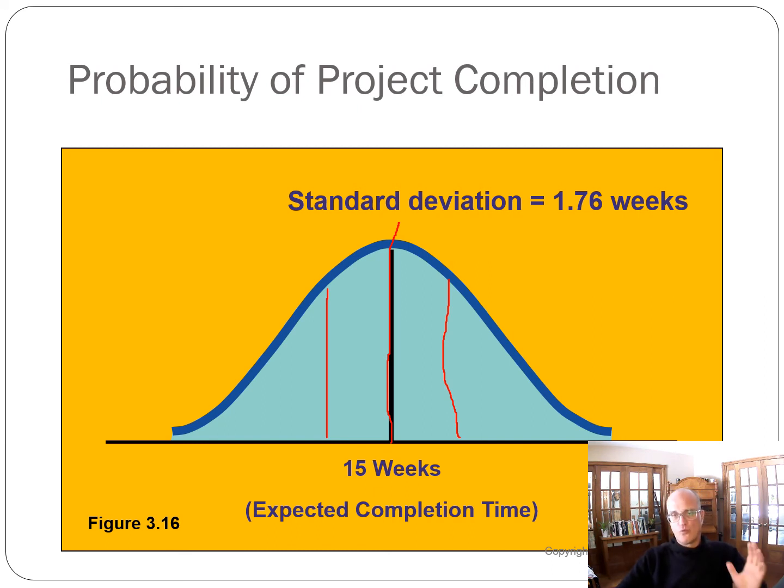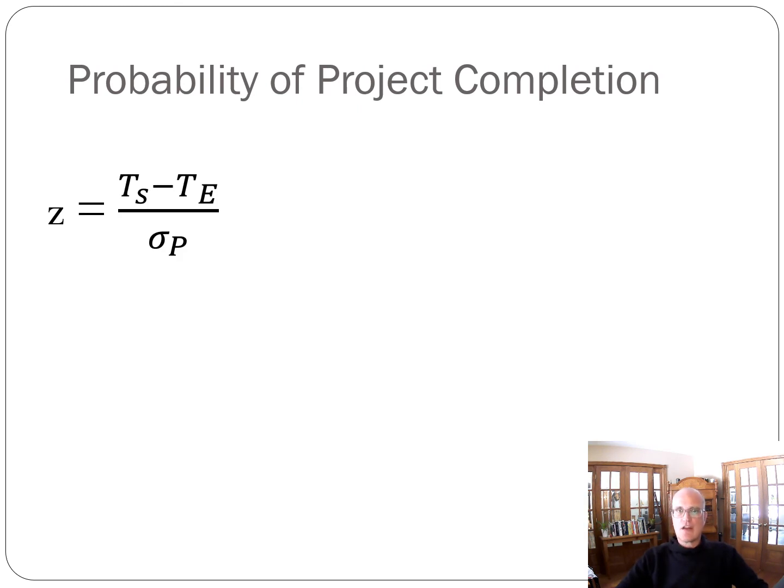So we look at the normal distribution, and then we can take a Z value, which is TS is the target time, TE is the expected time, divided by the standard deviation. This is another place that students often go wrong. They won't do the standard deviation, they will do the variance, and then they'll get a value that causes them some grief. And when you have that Z value, you can go to a standard normal table and find your probability.